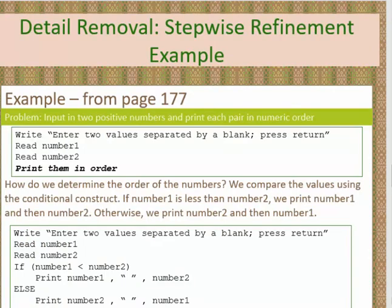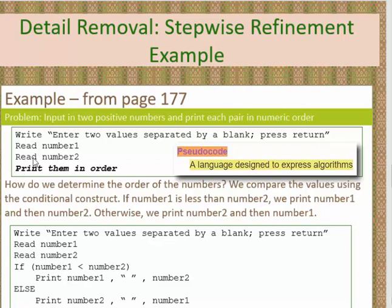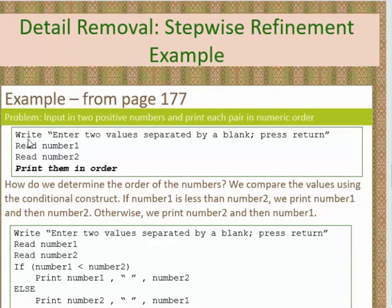The author gives a good example of stepwise refinement in the textbook, jumping into chapter 6. The problem: two numbers are going to be input, and we have no way of knowing whether the user will enter the smallest number first or the largest. However, the output must always be in numerical order. So we have pseudocode — pseudo means false code — generally giving us the steps we want to write. We'll ask the user to input two values separated by a blank and press return, then read the first number into a variable called number1.